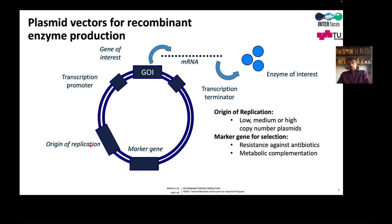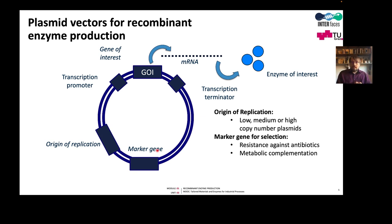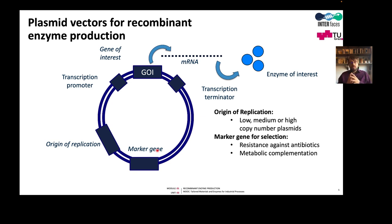There are two classes of marker genes. One class uses resistance against antibiotics, where the protein produced is an enzyme that degrades an antibiotic or provides an alternative target. A typical example is beta-lactamase, which attacks the beta-lactam ring of penicillin antibiotics. When these antibiotics are added to the culture, only cells with beta-lactamase survive, meaning only cells that have the plasmid with the marker gene.